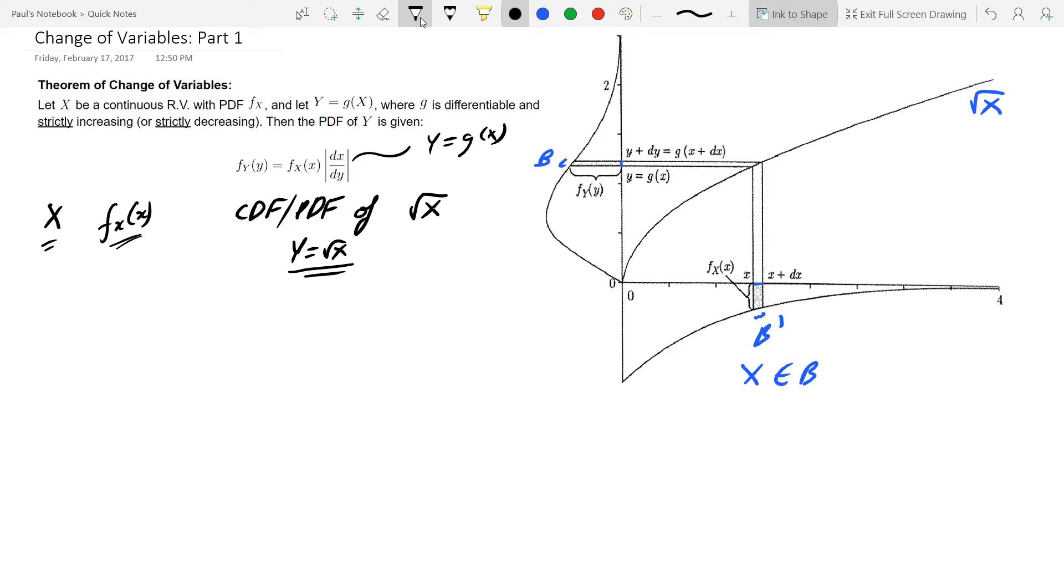And our question is, what is the structure or what is the underlying randomness structure of square root X, or otherwise known as what is the CDF and PDF of square root X. So I'm just going to label Y equals square root X here just for communication sake.